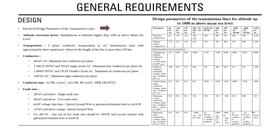The electrical design parameters of the transmission line specify values for altitudes up to 1000 meters above mean sea level. These include nominal voltage, highest system voltage, lightning impulse withstand voltage, and power frequency withstand voltage. All conductors and equipment placed at both ends must have these withstand capabilities. Basic insulation levels are specified for different voltage levels.